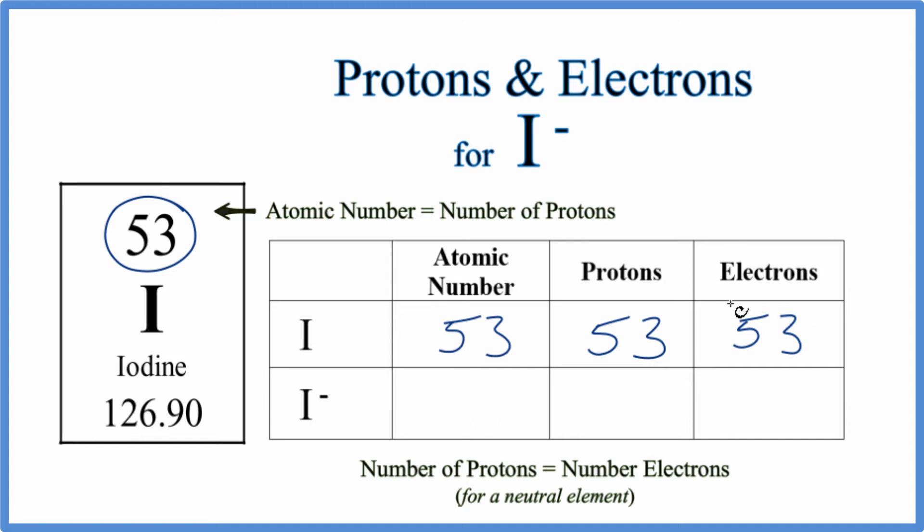So the atomic number for I minus is still 53, that's the identity of iodine. And that means we have 53 protons.